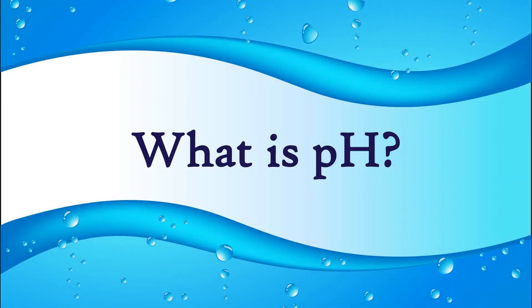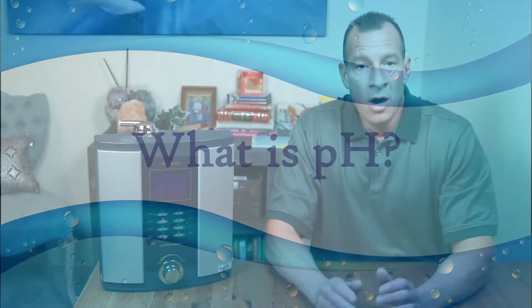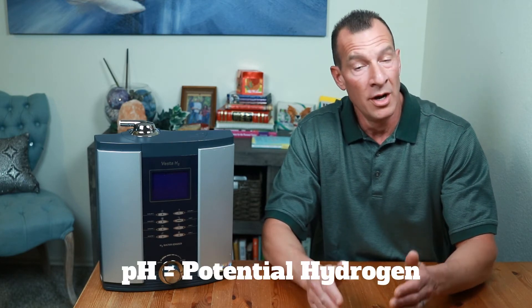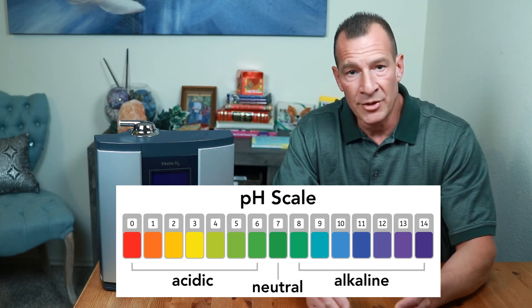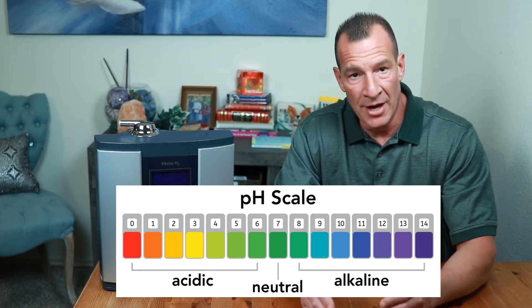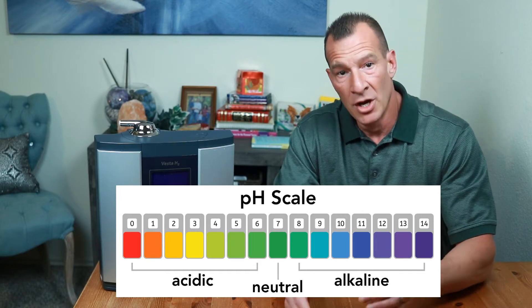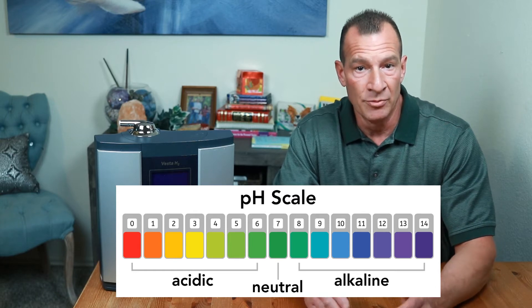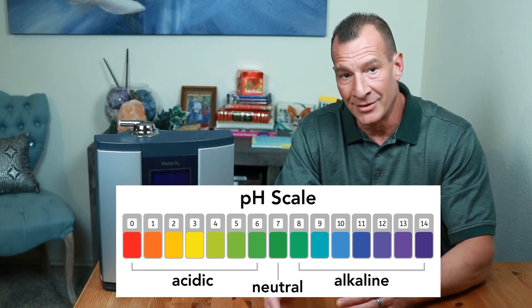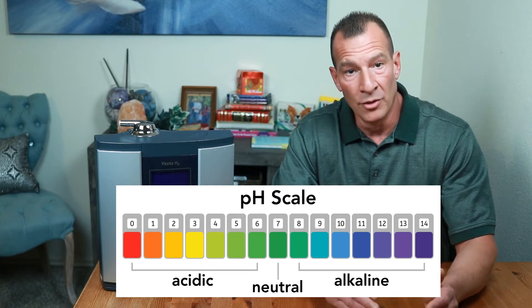Let's start with pH. A water ionizer, through a process of electrolysis, is capable of creating water with varying levels of potential hydrogen, or pH for short. A pH scale runs from 0 to 14, and a pH of 7 is considered neutral. Water that has a pH higher than 7 is considered alkaline. The higher the number above 7, the more alkaline the water is. For example, water with a pH of 9 is more alkaline than water with a pH of 8.